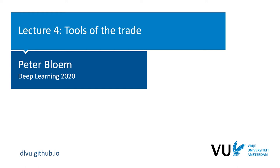Hello, and welcome to the fourth lecture of the Deep Learning course. In the previous lectures, we've seen how to build a basic neural network, how to train it using backpropagation, and we've met our first specialized layer, the convolution. Putting all this together, you can build some pretty powerful networks already, but doing so is not a trivial process. Today, we'll look at some of the things you need to know about how to actually design, build, and test deep neural networks.